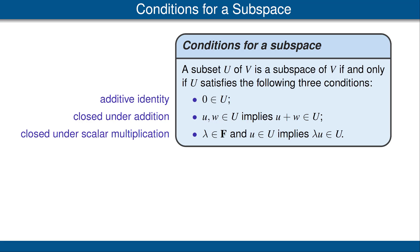These three conditions are often easy to check. The reason that we do not need to check the other properties of a vector space is that they are automatically satisfied. For example, one of the conditions is commutativity of addition, but addition is clearly commutative in U because it is commutative in V, and U is a subset of V. Let's use this result to look at some other examples of subspaces. We just need to check these three properties: that we have the additive identity, that the set is closed under addition, and that it is closed under scalar multiplication.